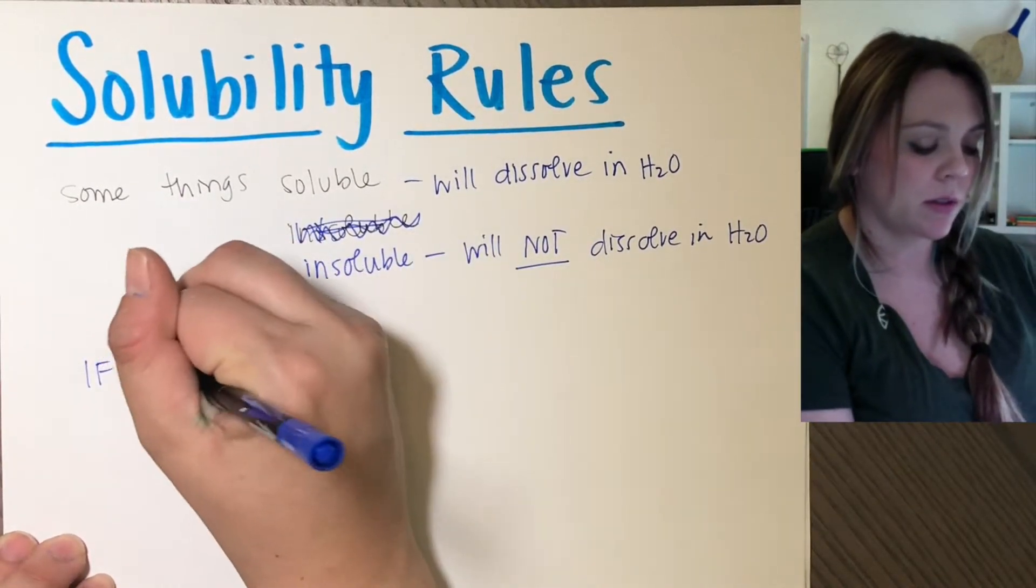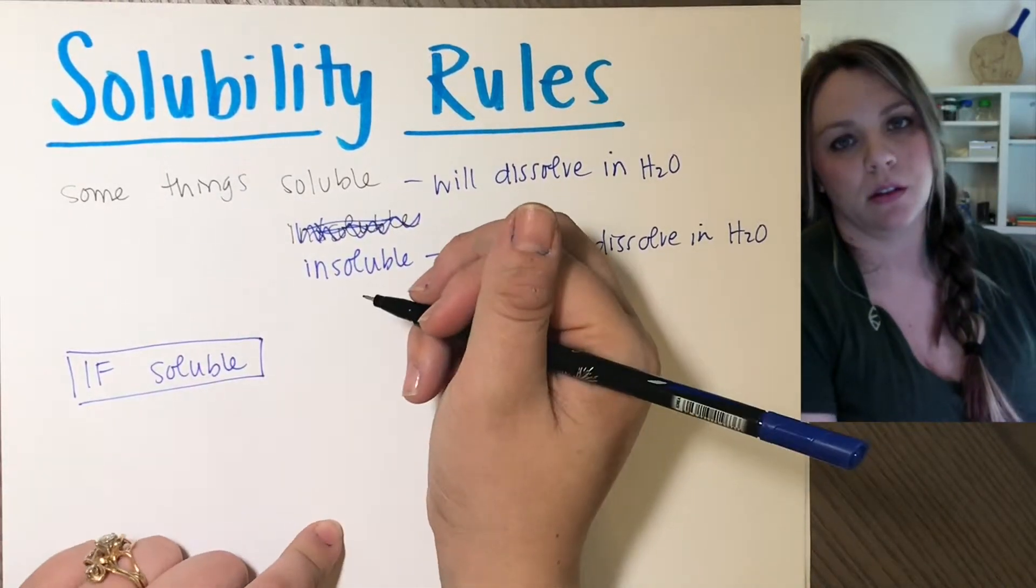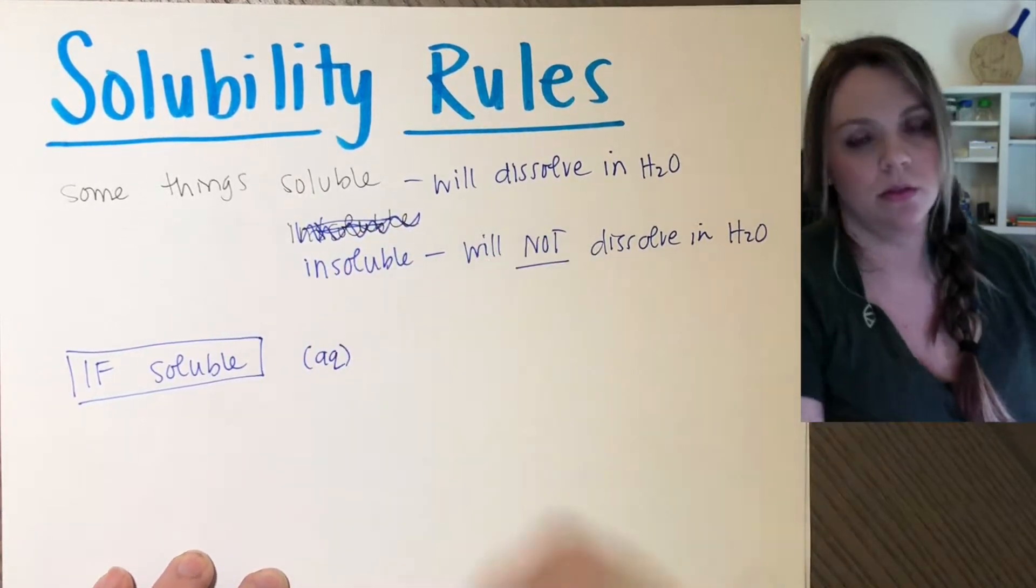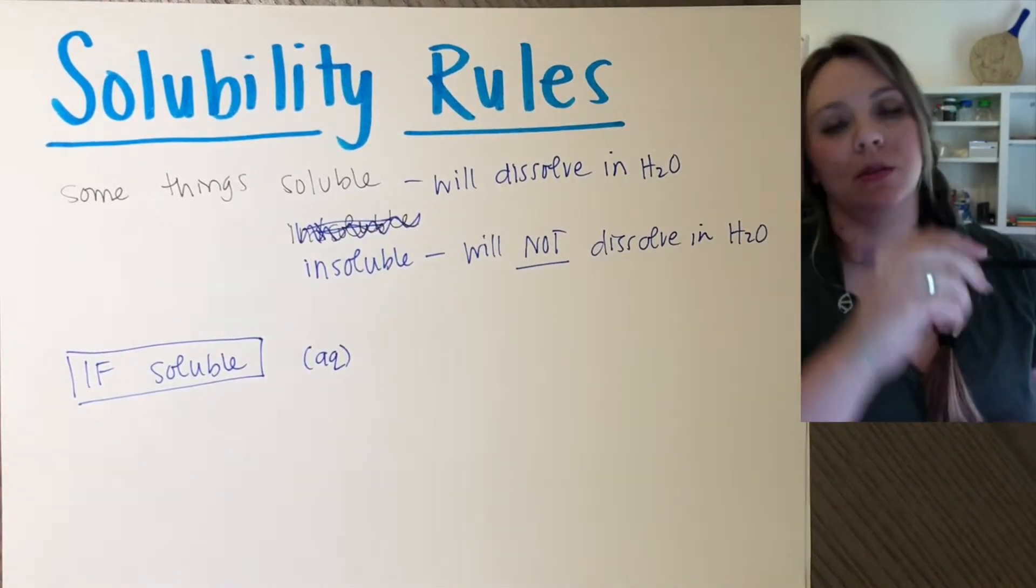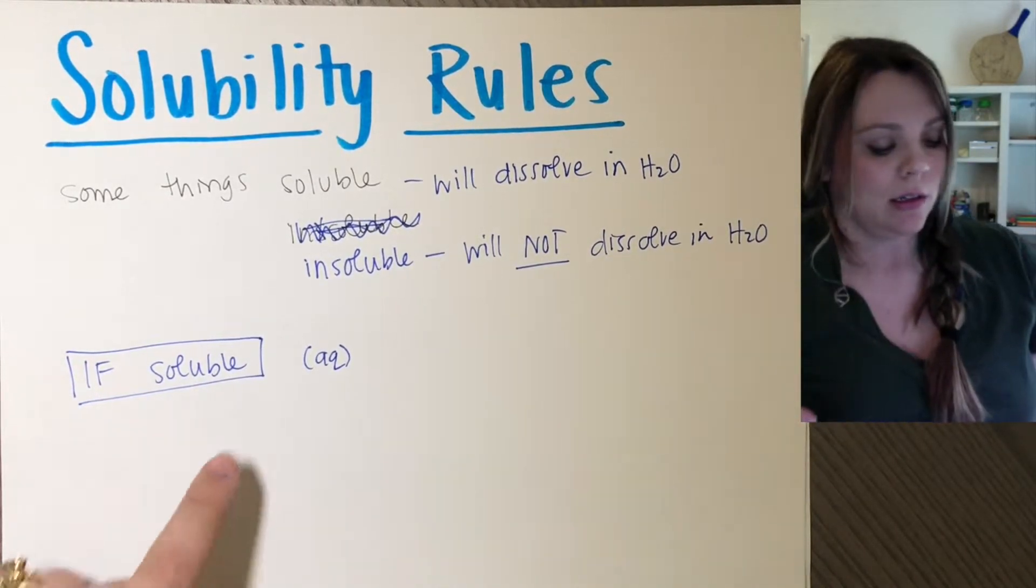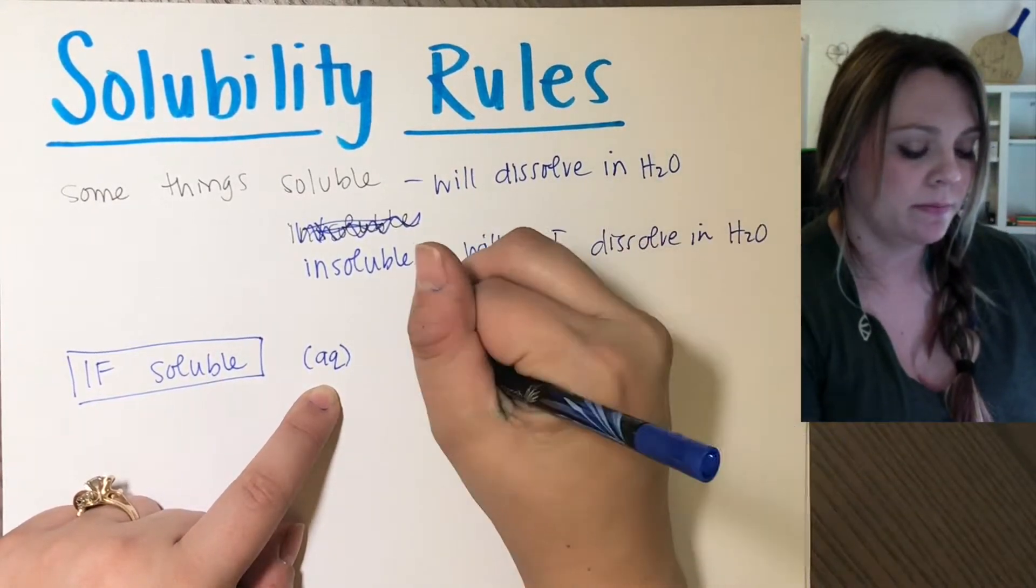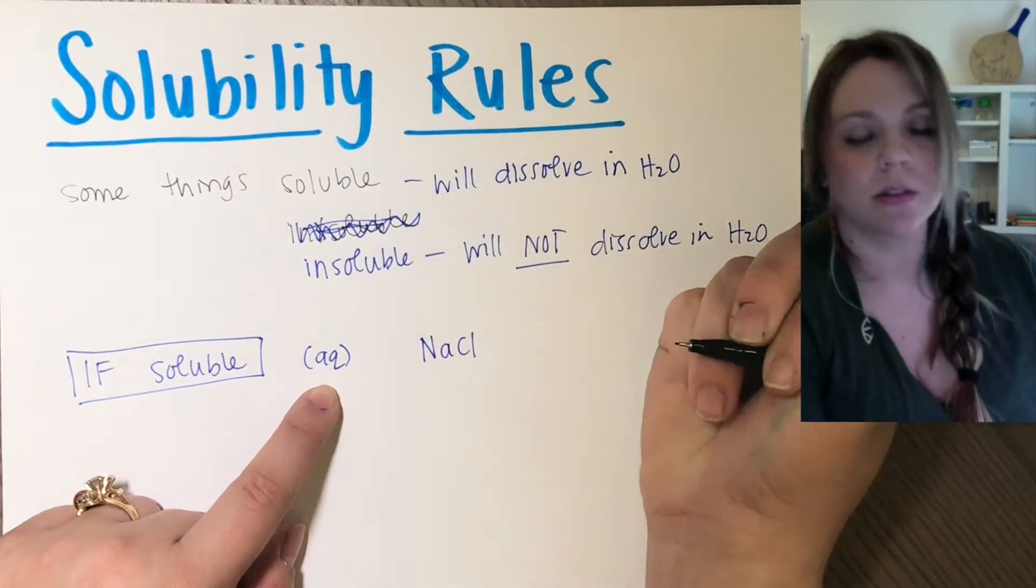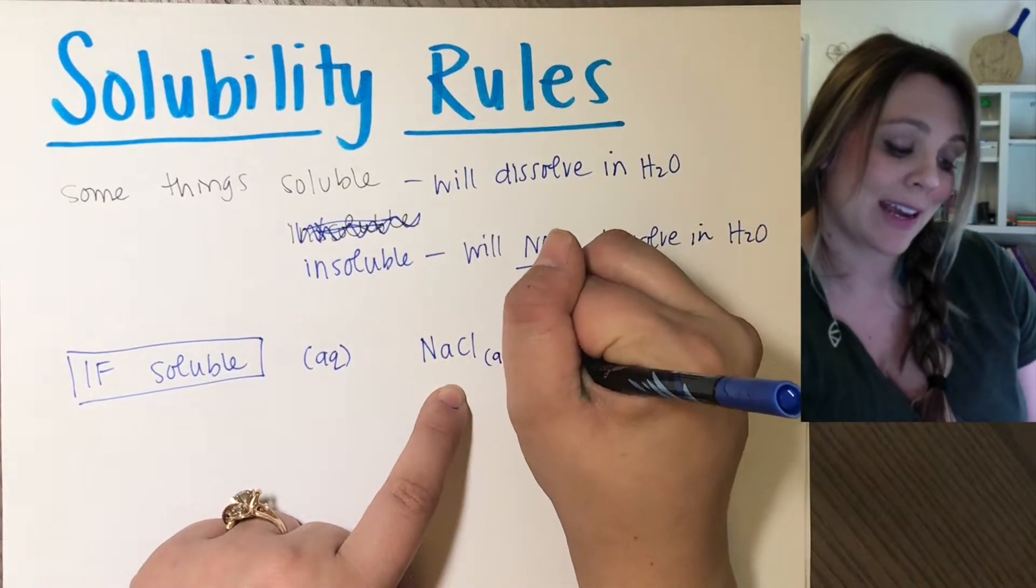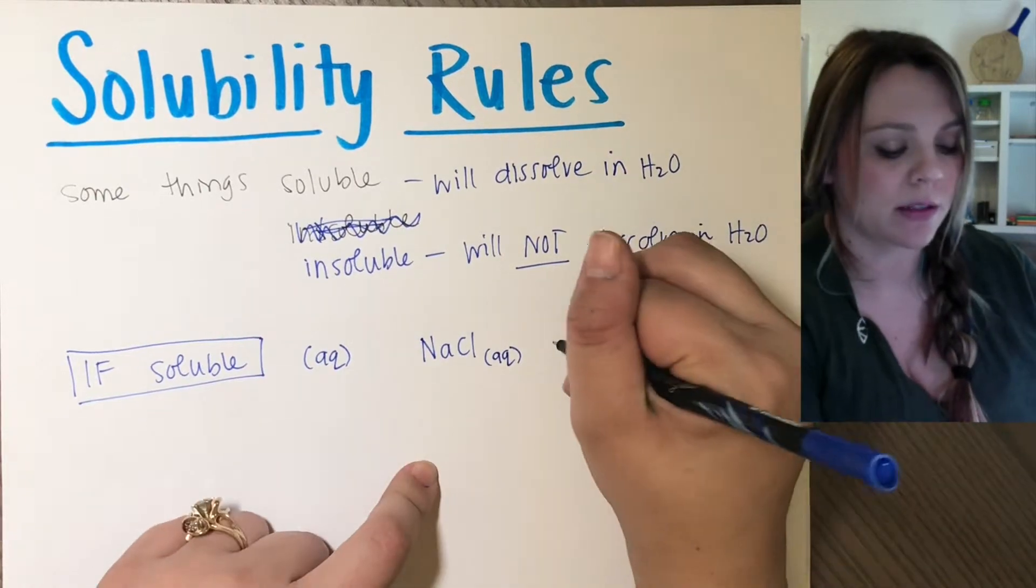If your substance is going to be soluble, you are going to see the little subscript of AQ next to the chemical formula. So sometimes we'll write out net ionic equations or something that actually has the different chemical formulas, different compounds. For example, we know that salt is soluble. Salt will dissolve in water. So you'd have NaCl and then a parenthesis AQ because it denotes that it's aqueous. It will dissolve in water. That means it's soluble.